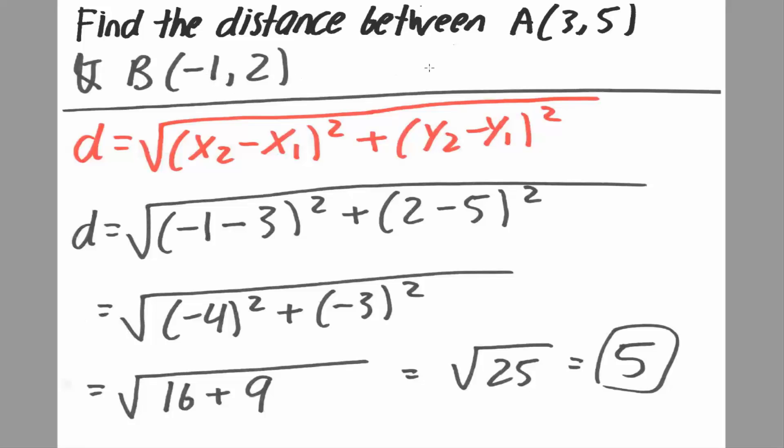Now in order to do so, we have to use the distance formula. So distance is equal to the square root of x2 minus x1 parentheses squared plus y2 minus y1 parentheses squared.